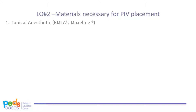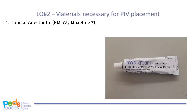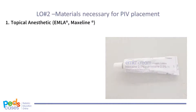First, consider using a topical anesthetic. Common topical anesthetics may include Emla cream, which takes full effect in about 30 to 45 minutes, or Maxilene, which is a faster onset option taking full effect in about 20 to 30 minutes. If time permits and the situation is not urgent, plan ahead and apply a topical anesthetic to the intended IV site. This has been clinically proven to reduce the pain felt by the child.